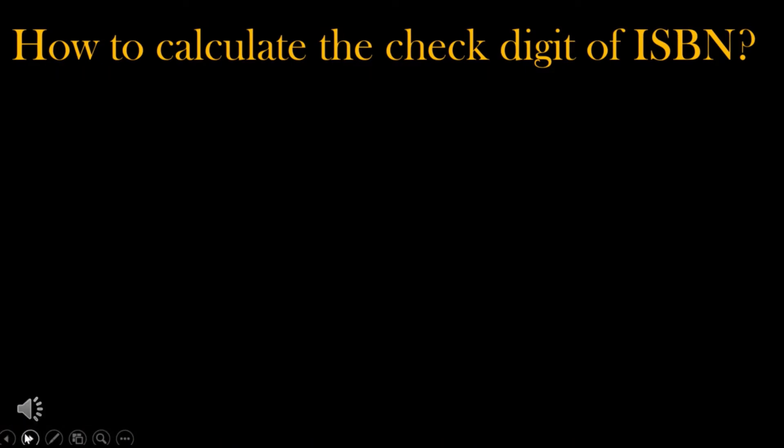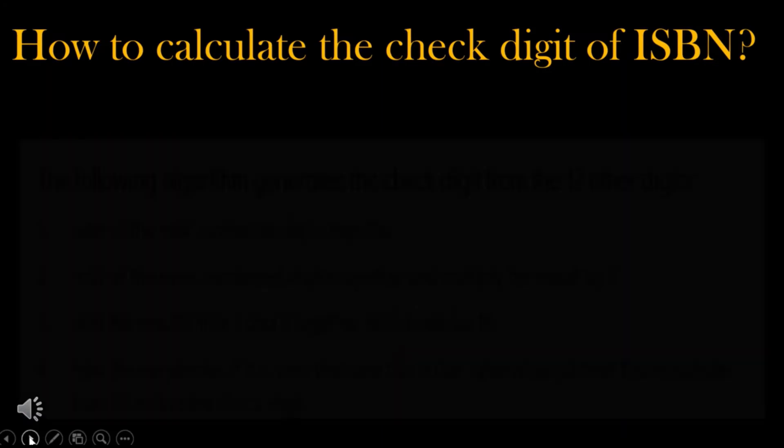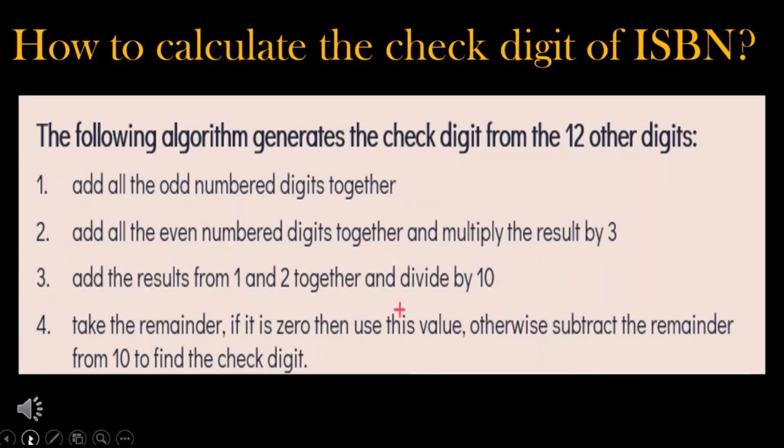To calculate the check digit of an ISBN code, the following algorithms must be followed. Step 1: We have to add all the odd number digits together. Step 2: We add all the even number digits and multiply the result by 3. Step 3: Add the results of step 1 and step 2 and divide by 10. Step 4: We have to take the remainder. If the remainder is 0, we use that value. Otherwise, subtract the remainder from 10 to find the check digit.